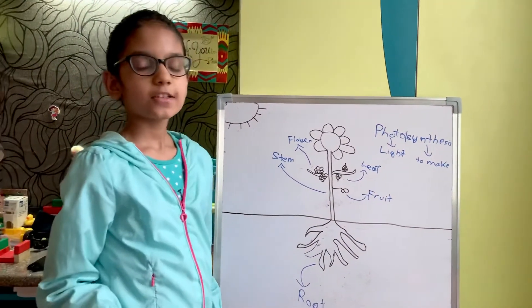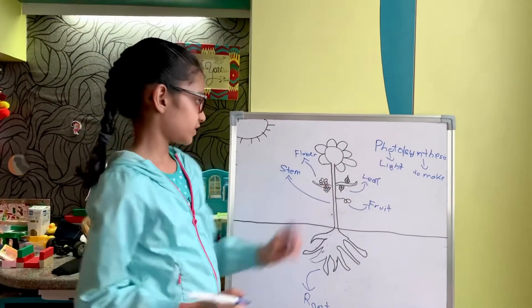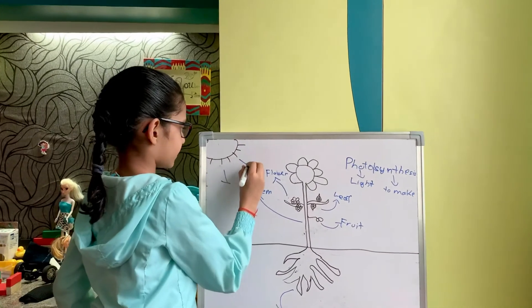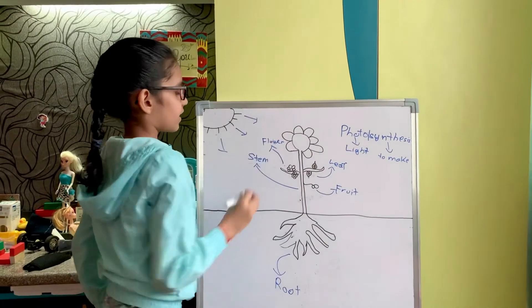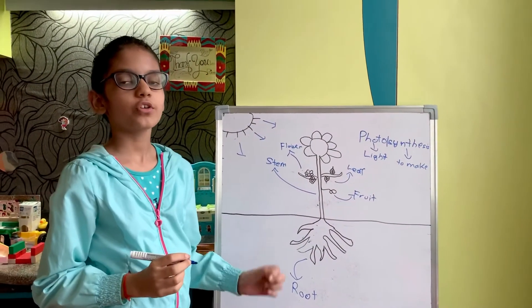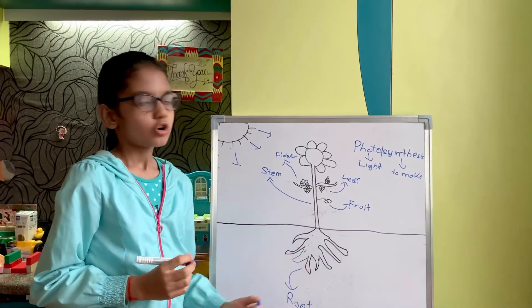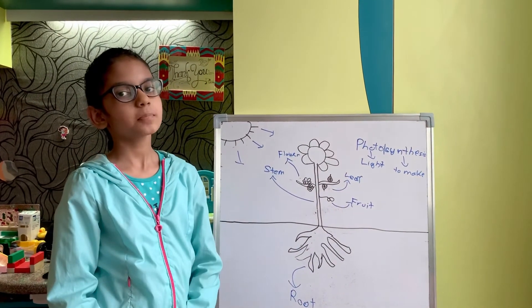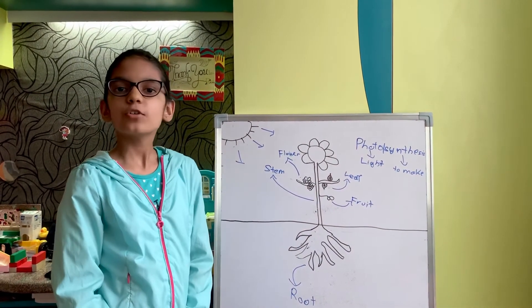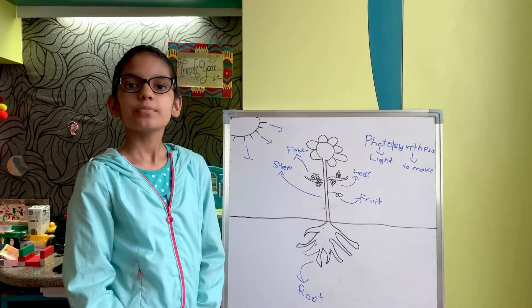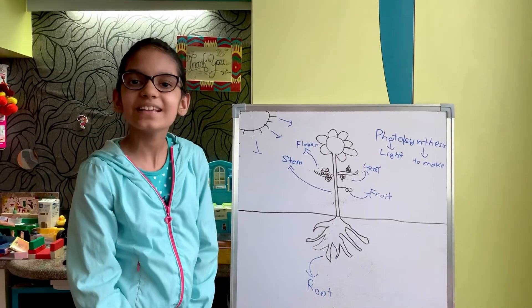So the leaf makes food with the process called photosynthesis, as it absorbs sunlight and rain to make food for the other parts of the plant. Hope you now know the parts of the plant with its functions and photosynthesis. We will make the next video. Thank you.